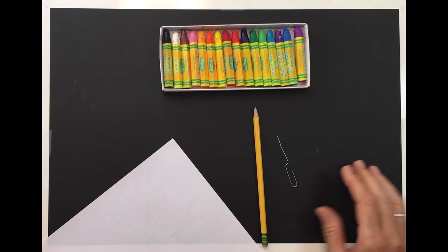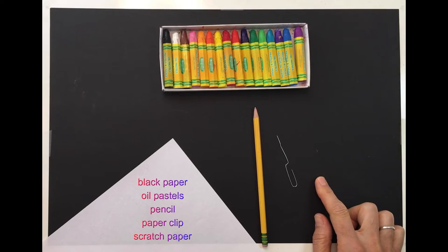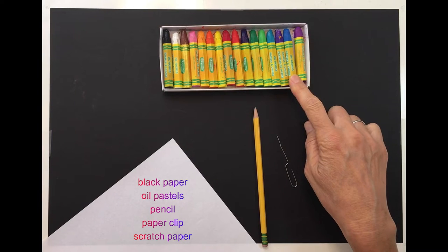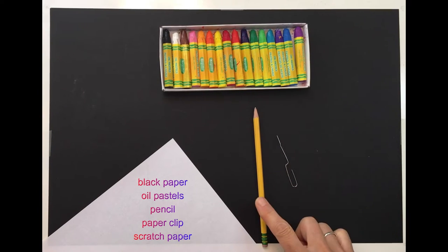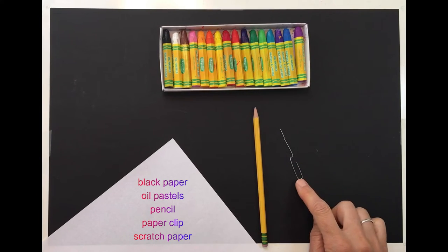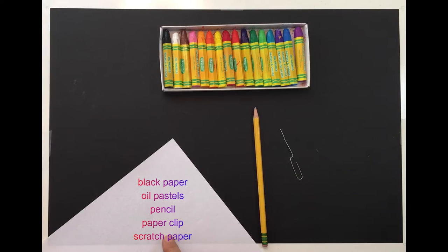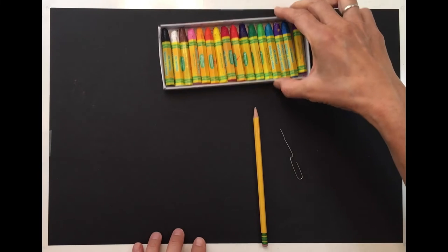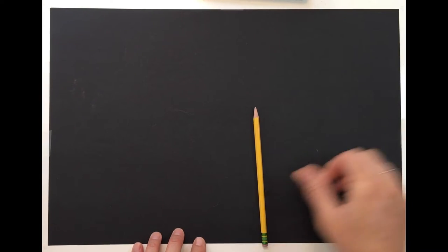To make our turtle, we're going to need a black sheet of construction paper, and I have a large one. I also have my oil pastels, a pencil. If you want to do sgraffito, you're going to need a paper clip that's been opened up, and a piece of scratch paper for tapping off.